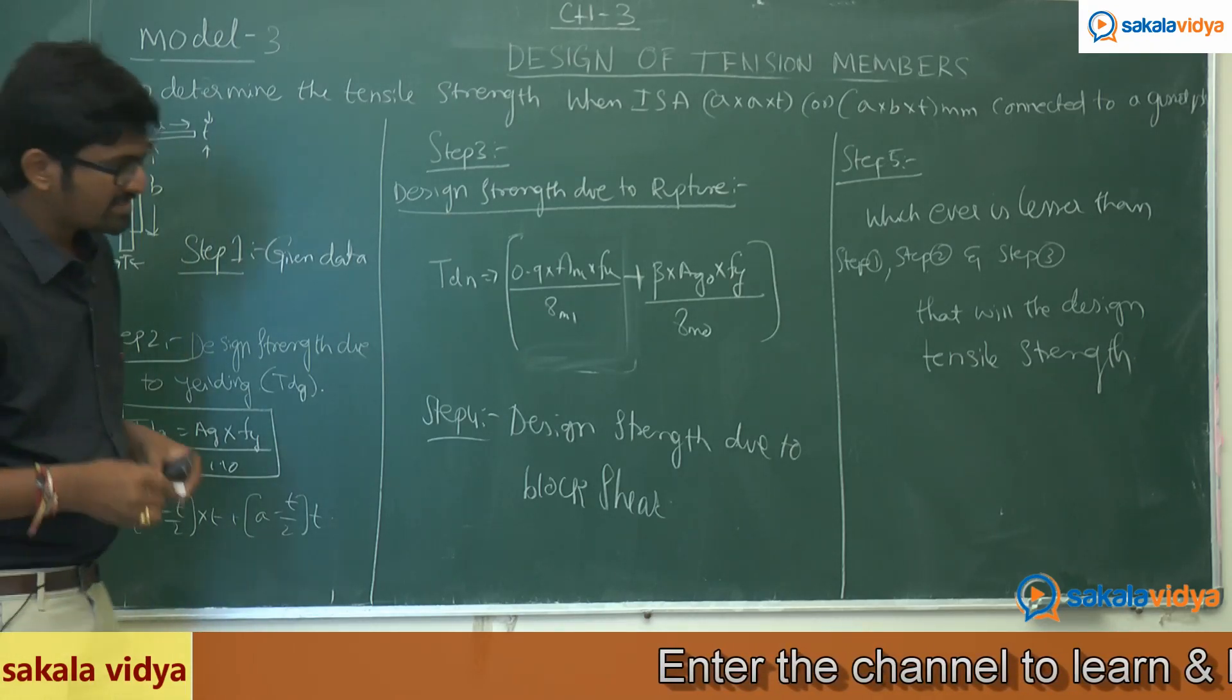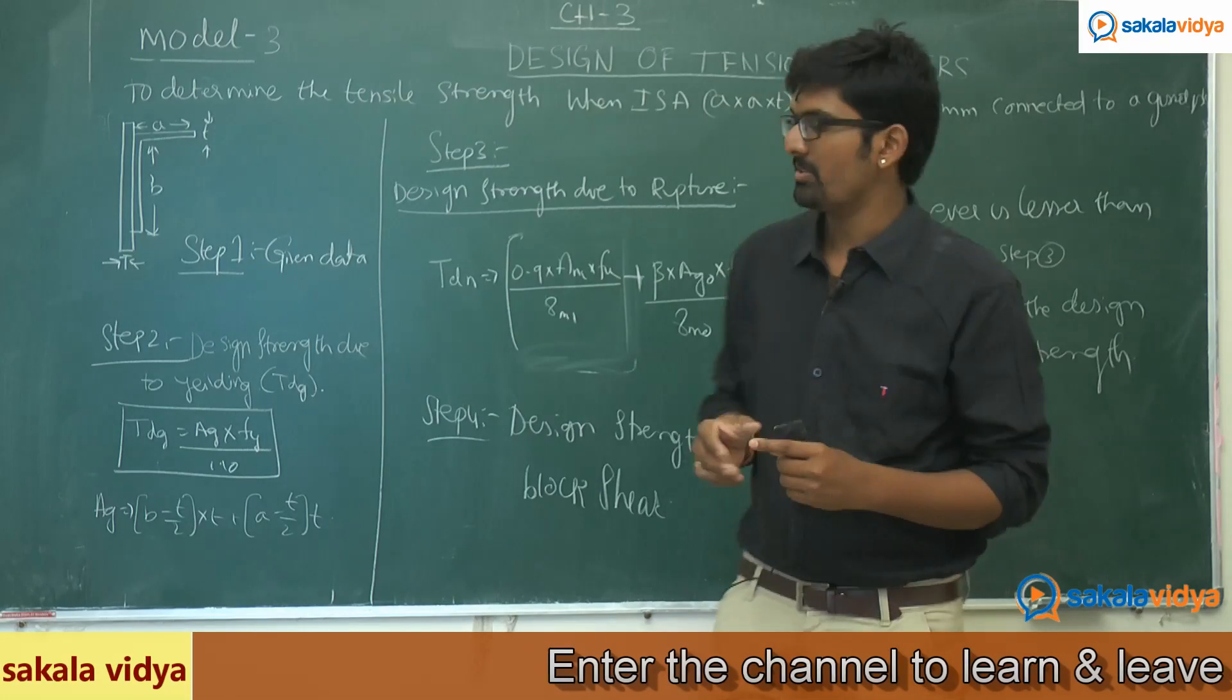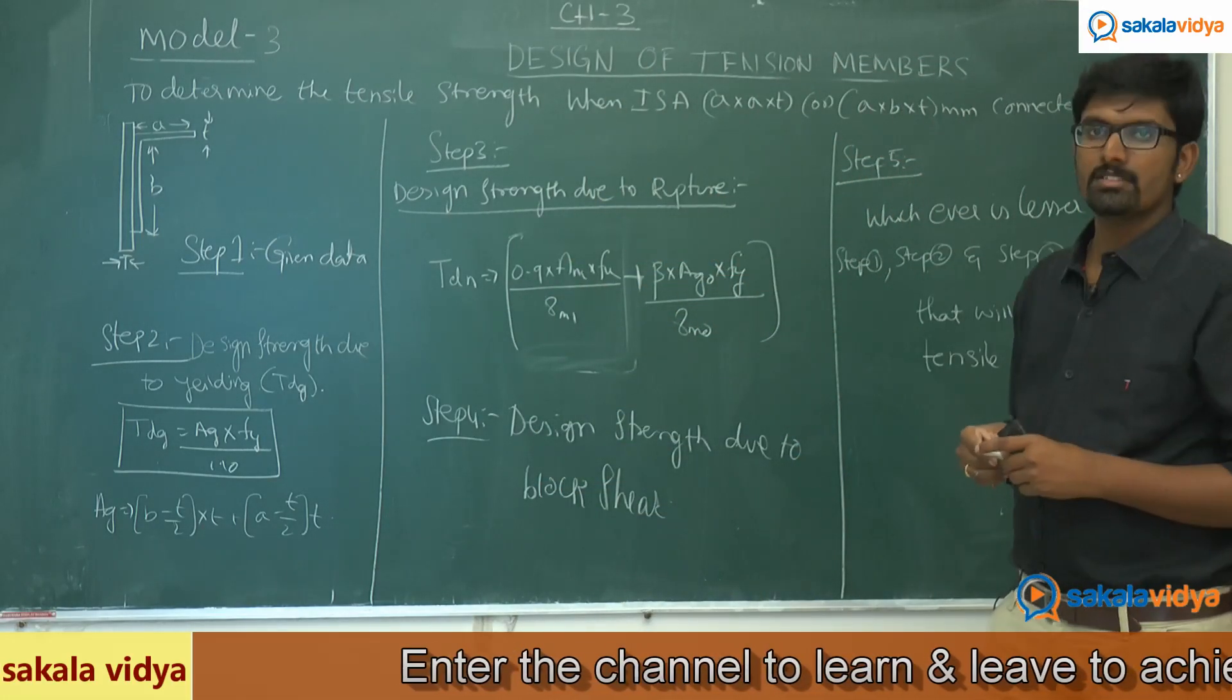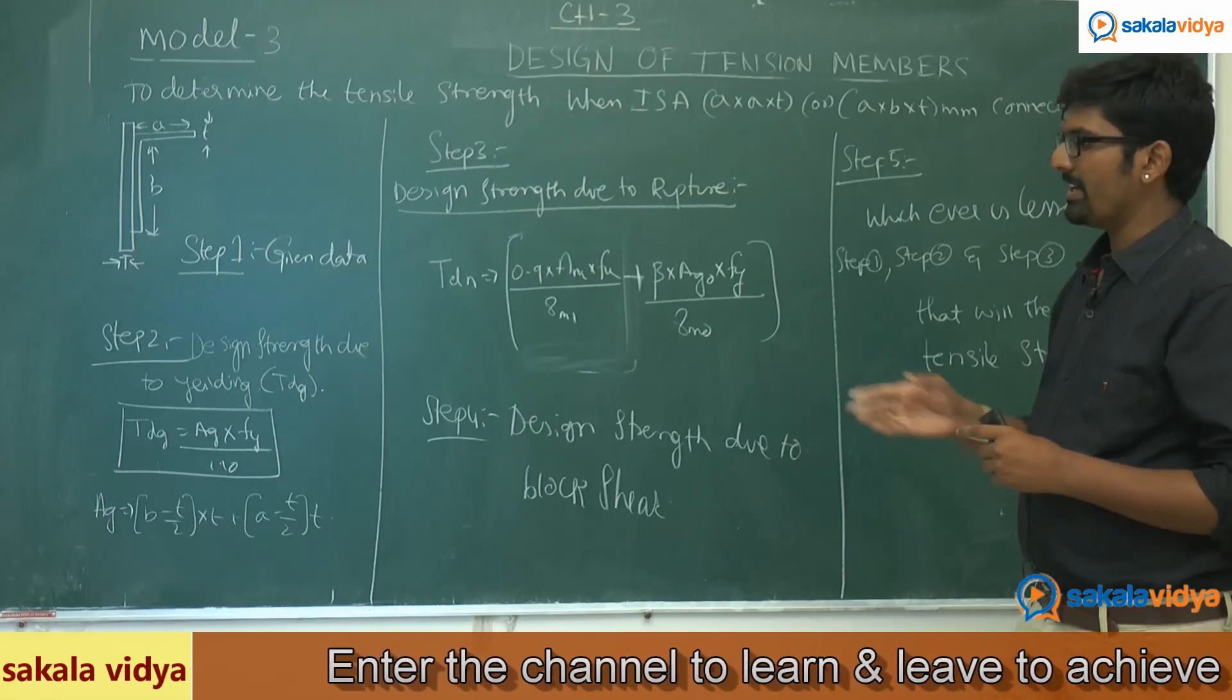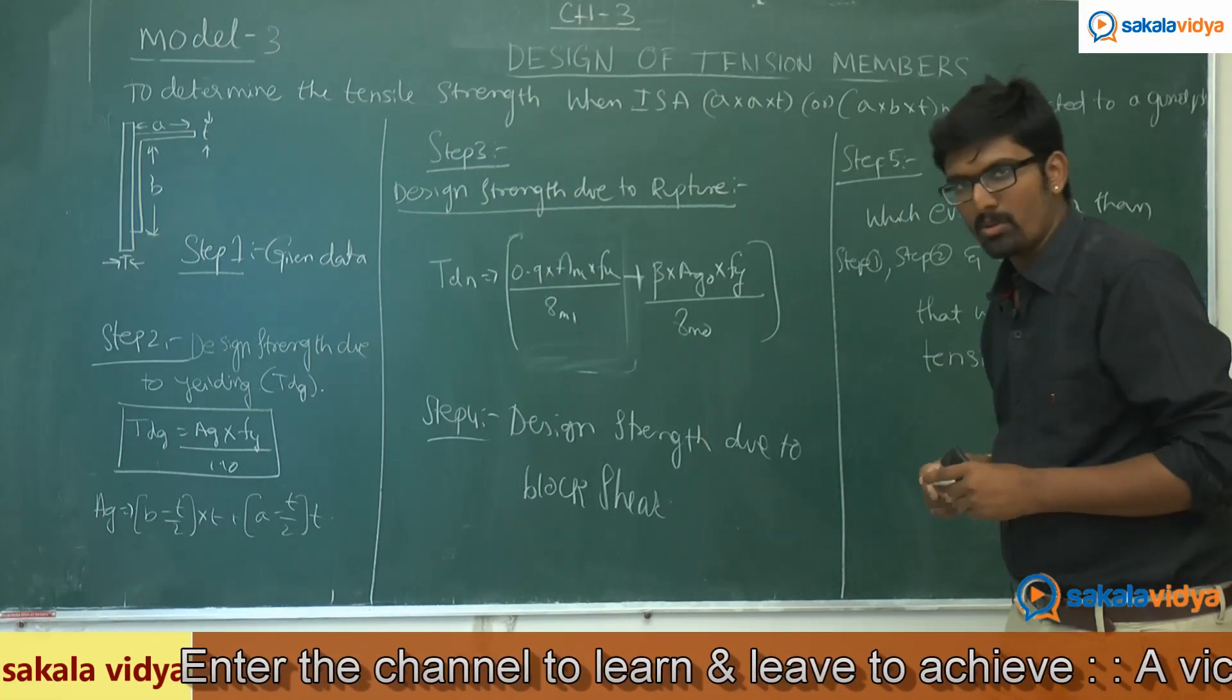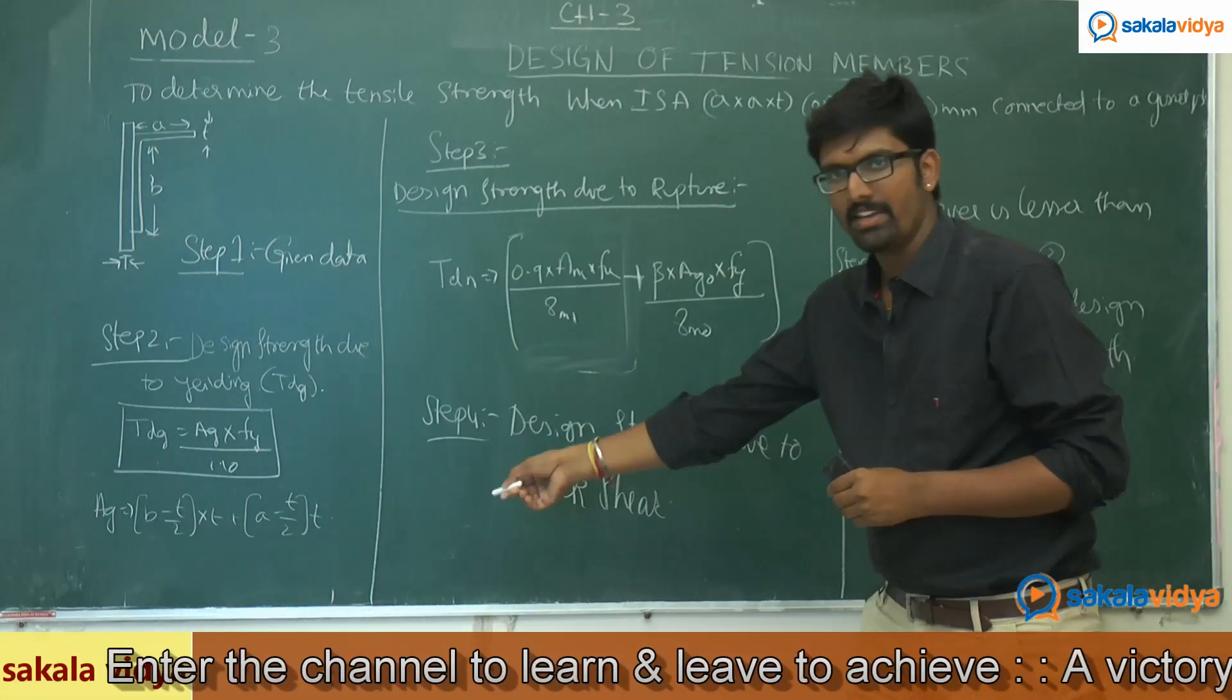So in order to find the design tensile strength of any angle section, first we need to follow all these steps. Step 1, we need to write the given data. Step 2, design strength due to yielding. Formula is TDG equals AG0 into FY by 1.10, where the formula of AG is given here.